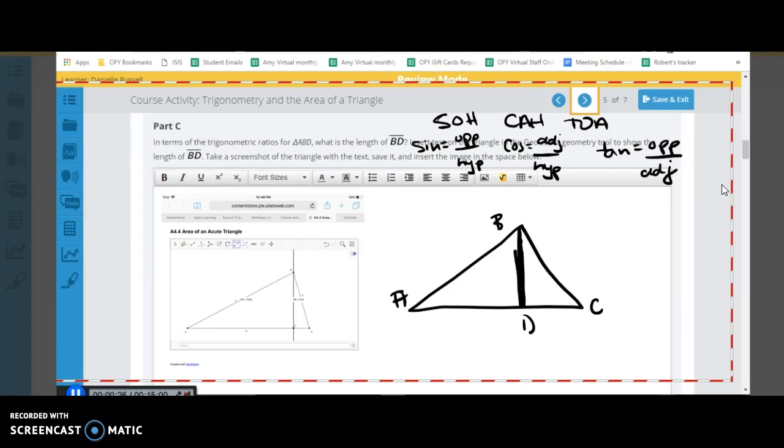So in terms of trig ratios, we know this is the right angle here, which you put in a different part. So we're going to use this angle A here to figure out what BD is just in terms of the ratios, not the actual numbers. If we're using A, then this side here is the opposite, this side here is the adjacent, and this side here is hypotenuse. So now, in order to find this, we can use the sine of A.